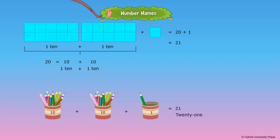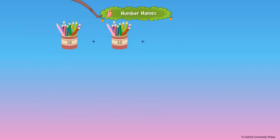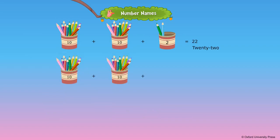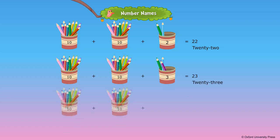20 plus 1 is equal to 21. 20 plus 2 is equal to 22. 20 plus 3 is equal to 23.